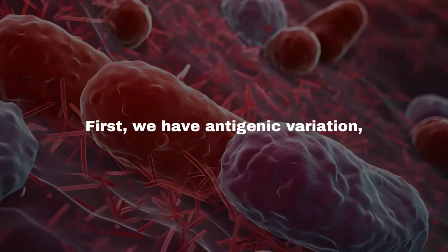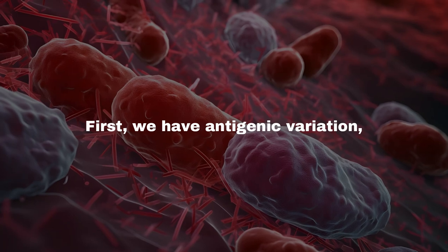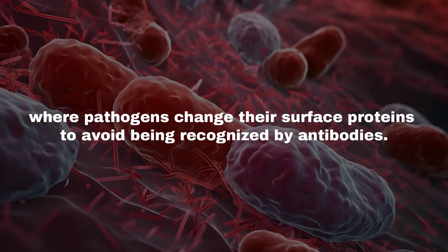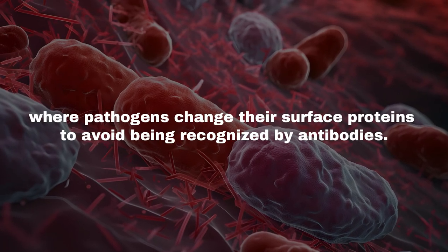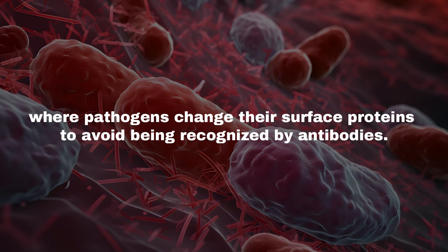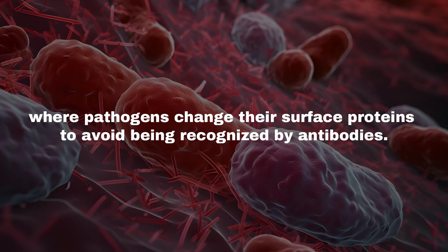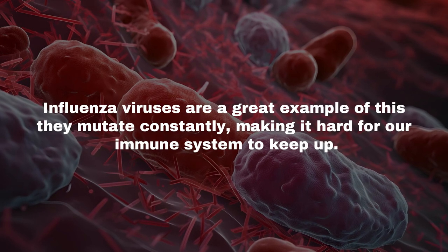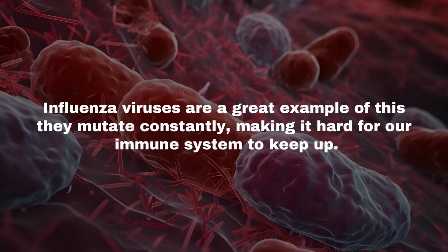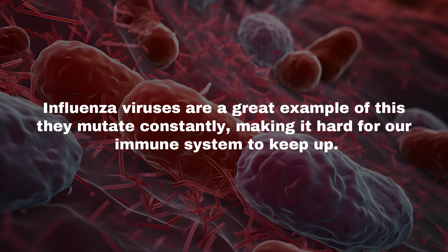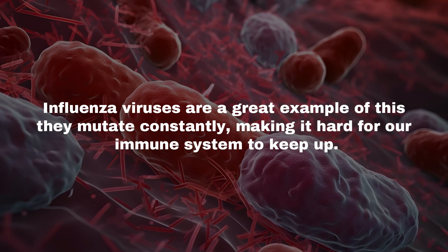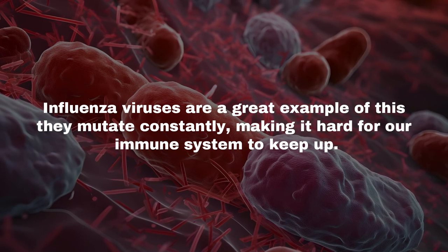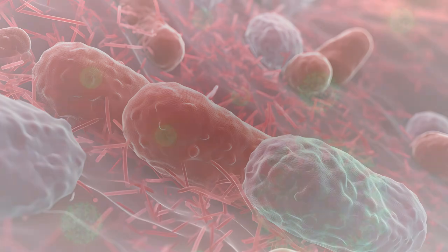First, we have antigenic variation, where pathogens change their surface proteins to avoid being recognized by antibodies. Influenza viruses are a great example of this — they mutate constantly, making it hard for our immune system to keep up.